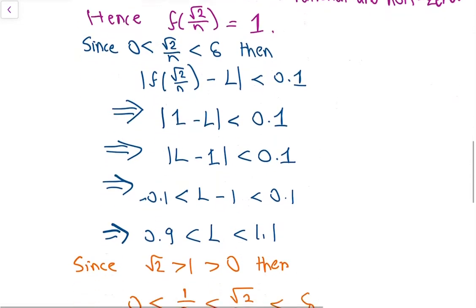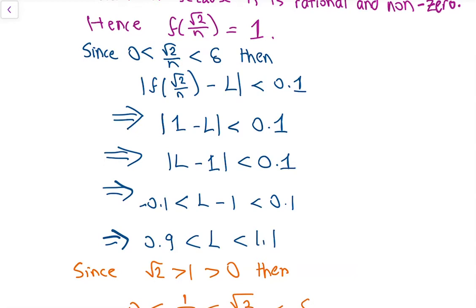Using the fact that √2/n is greater than 0 and less than delta, it follows that |f(√2/n) − L| < 0.1. Since f(√2/n) = 1, we have |1 − L| < 0.1, which means L is quite close to 1. So we have −0.1 < L − 1 < 0.1, giving us 0.9 < L < 1.1.